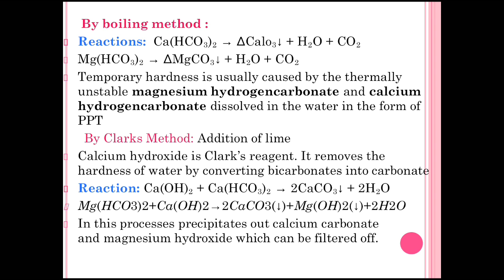The second method is Clark's method, which involves the addition of lime (calcium hydroxide). Calcium hydroxide is the Clark's reagent; it removes hardness of water by converting bicarbonate into carbonate. When calcium hydroxide is added to water containing calcium bicarbonate, calcium carbonate precipitate settles at the bottom, which can be removed by filtration.